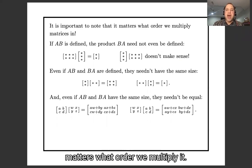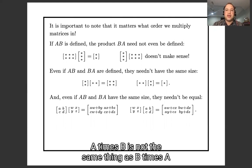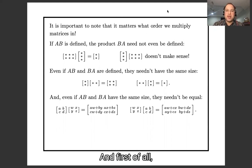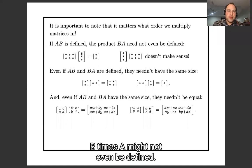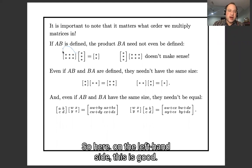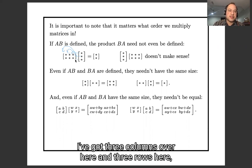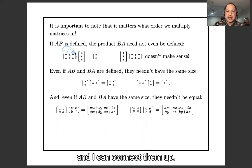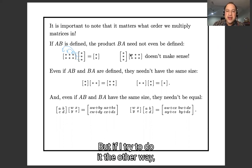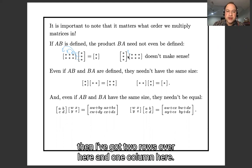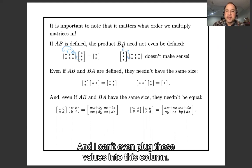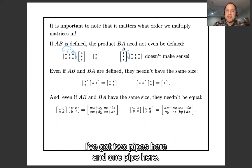So one thing that's very important is it matters what order we multiply in. A times B is not the same thing as B times A with matrices. And first of all, B times A might not even be defined. So here on the left hand side, this is good - on the left hand side I've got three columns over here and three rows here and I can connect them up. But if I try to do it the other way, then I've got two rows over here and one column here, and I can't even plug these rows into this column. I've got two pipes here and one pipe here - they don't connect. So the product might not even make sense in both orders.